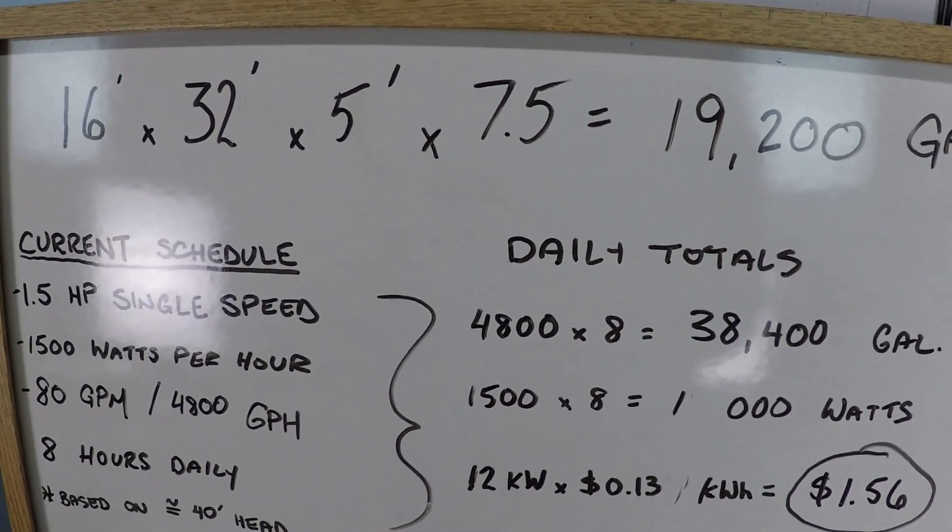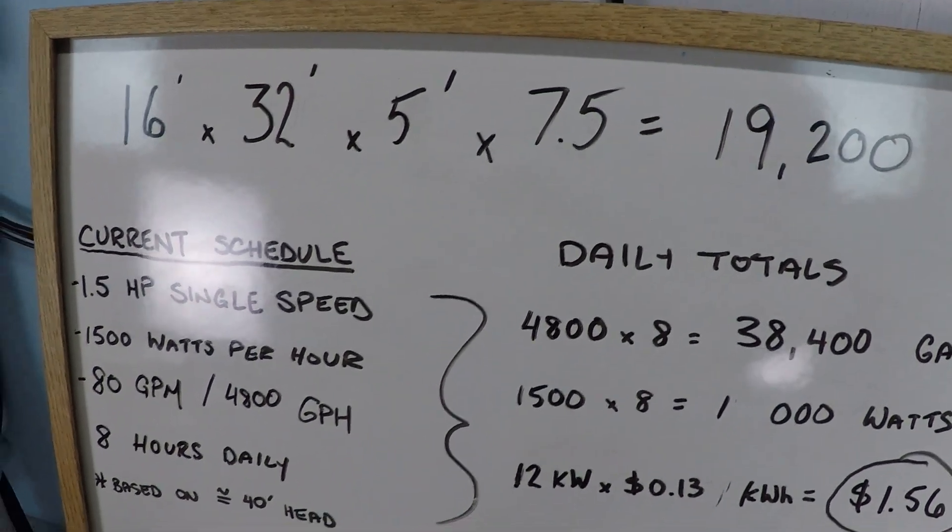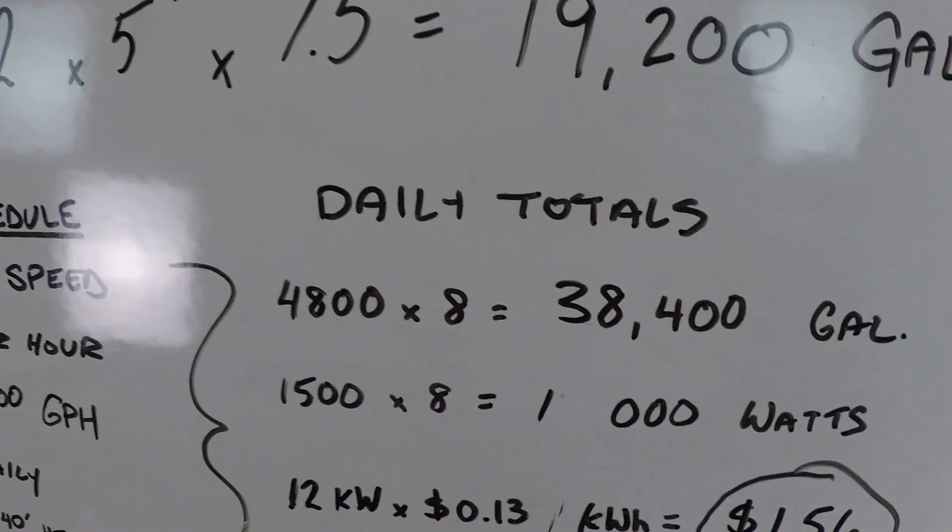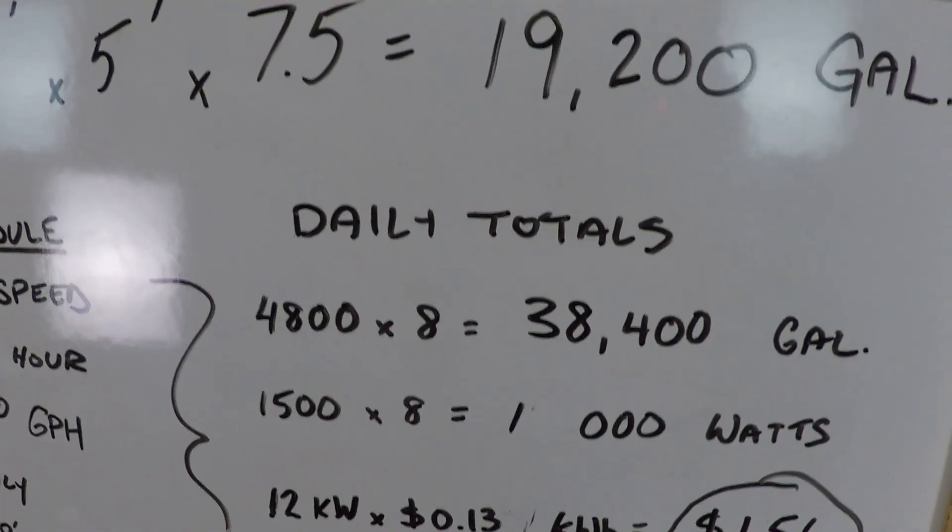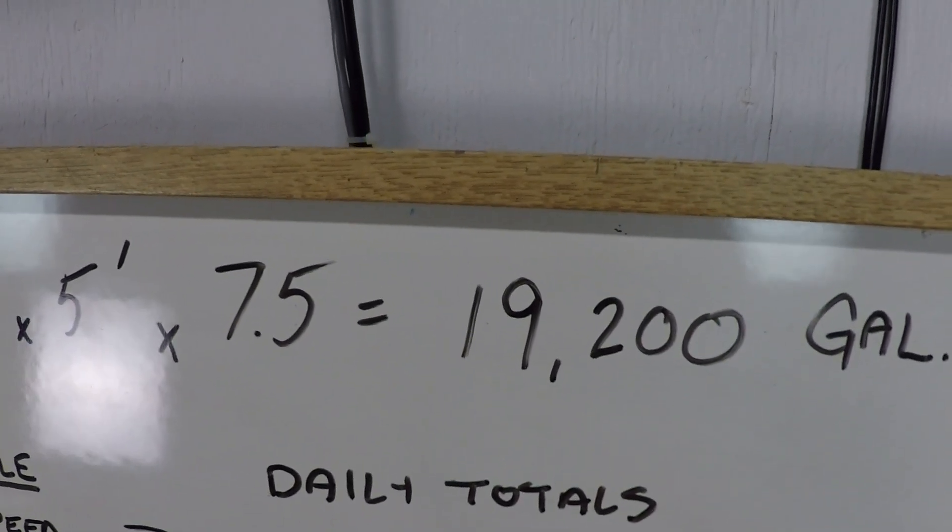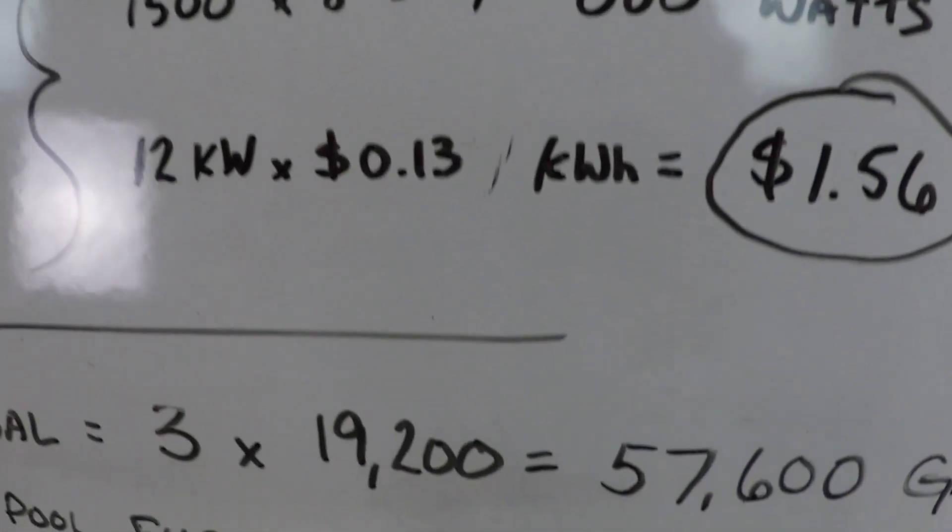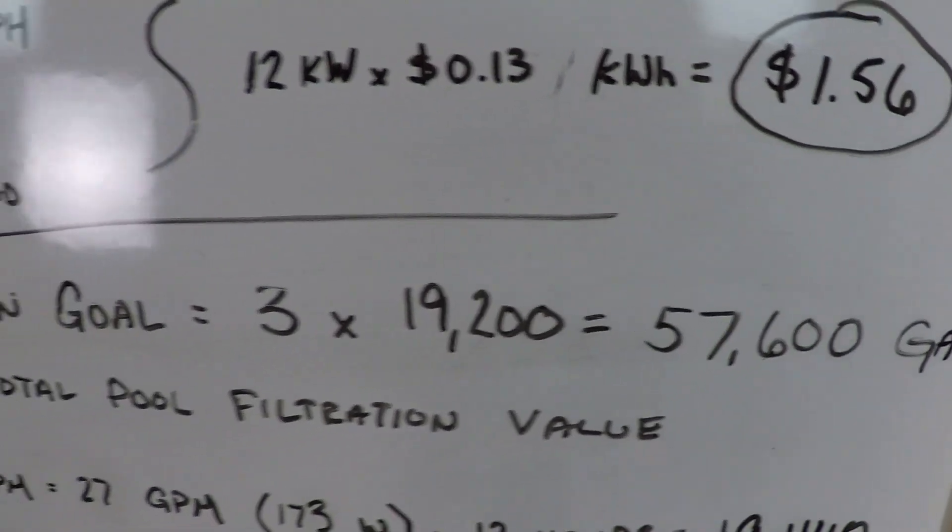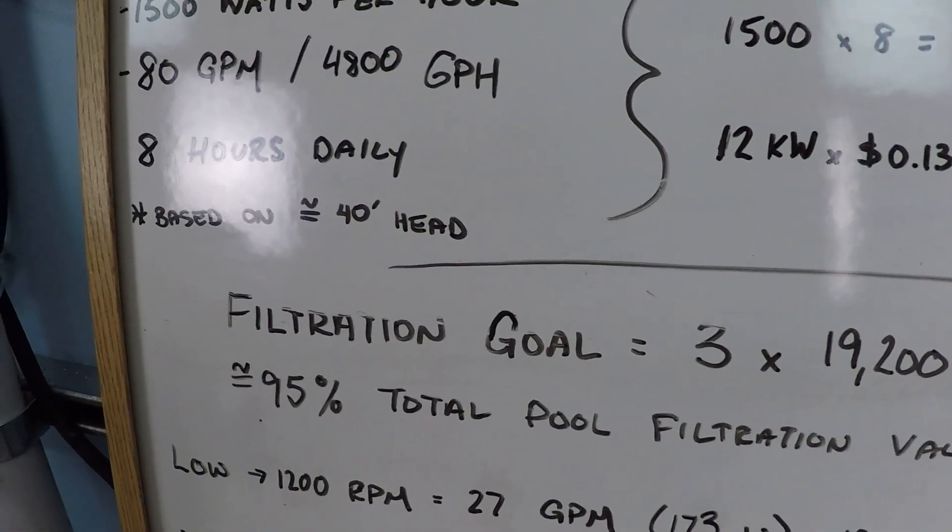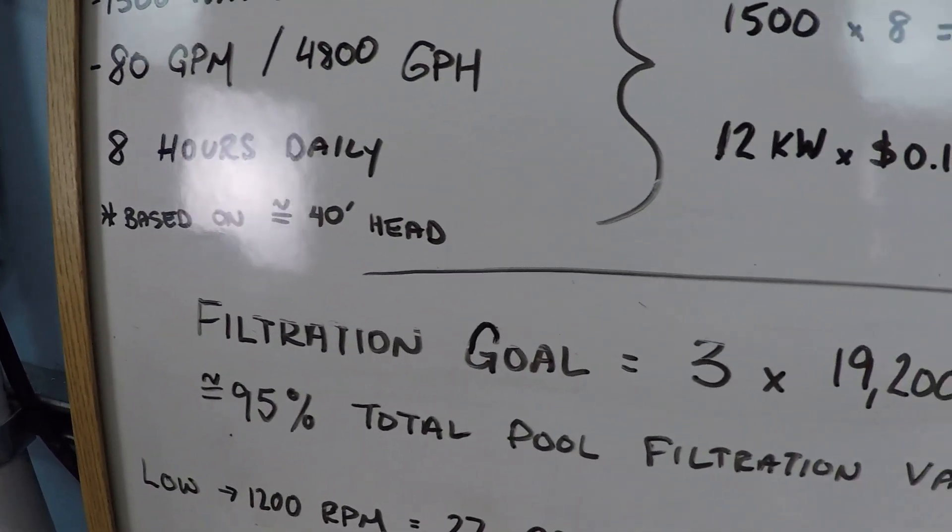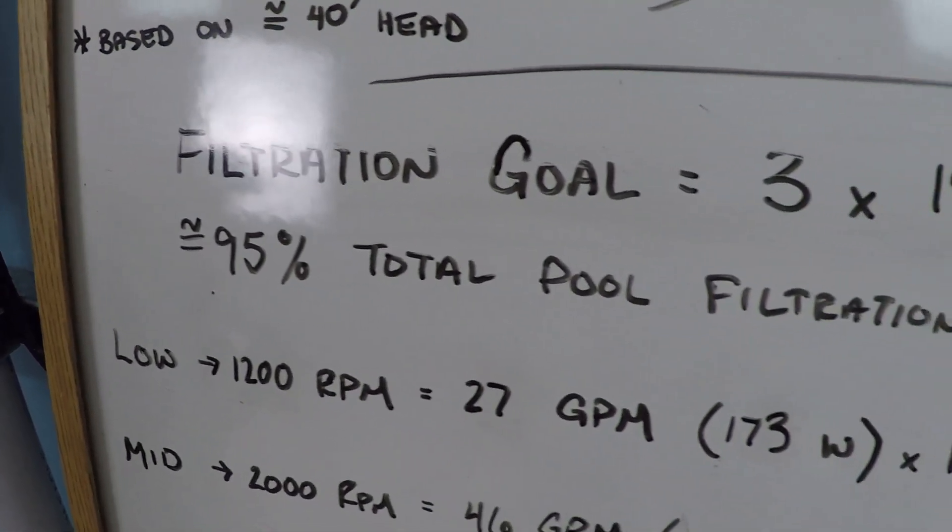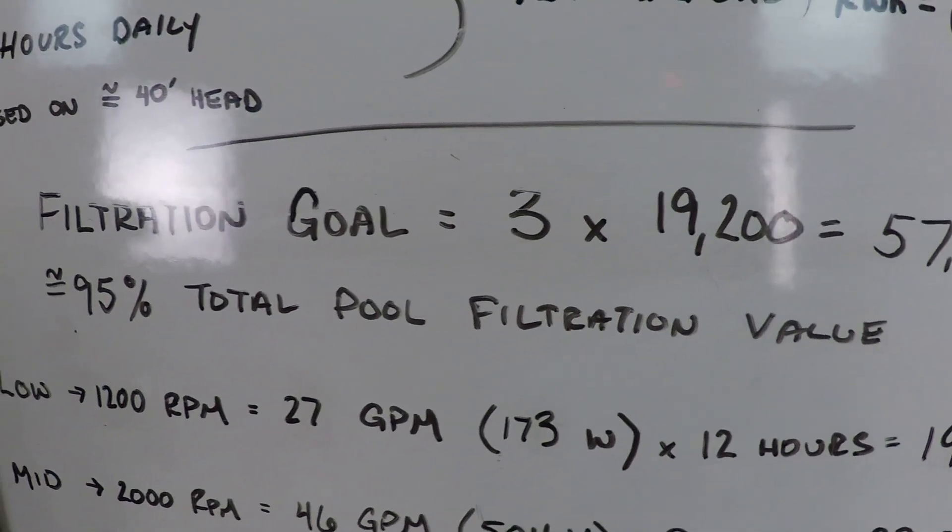I did mention in that video that I would do a follow-up with something that I would consider to be a more optimal variable speed schedule. Basically, instead of having 38,000 gallons daily for this pool, I want to triple this number. So our filtration goal now, 57,600 gallons per day, which should result in approximately 95% of all pool water being filtered at least one time.